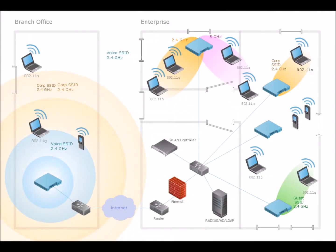Segregation on a wireless level can be achieved by creating several wireless networks. Each network profile has its own permissions in regards to data and services access. Guest users should be managed on a separate network with minimal permissions to ensure security.